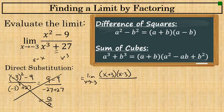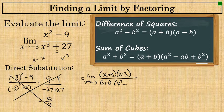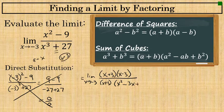Using the sum of cubes formula, the factorization of x to the third plus 27 is x plus 3 times the quantity x squared minus 3x plus 9, since b equals 3 and b squared equals 9.